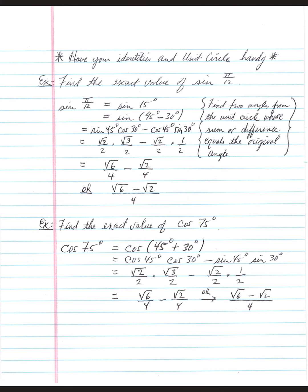Using sum and difference formulas — found on your identity sheet — the idea is to pick two angles from the unit circle that add up or subtract to 15 degrees. 45 minus 30 is one option. Find the sine difference identity: the expansion is sine(45)·cosine(30) minus cosine(45)·sine(30). You'll need to match the u's and v's from your identity sheet correctly.